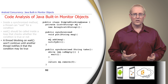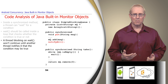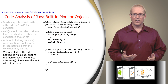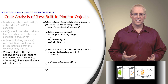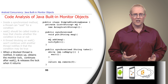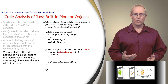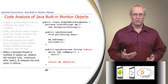A thread blocking on wait won't continue until another thread notifies it that the condition may be true. For example, a take call blocked because the ArrayList MQ is empty won't wake up until put notifies it that there's a message to process. When a thread blocked on wait is notified, it wakes up, obtains the monitor lock, and checks whether the condition has been satisfied. If so, it exits the loop and continues processing. When done, it releases the monitor lock and leaves the monitor object. When a blocked take call is awakened after put calls notifyAll, it checks that the MQ ArrayList is no longer empty, then removes and returns the first item in the list.